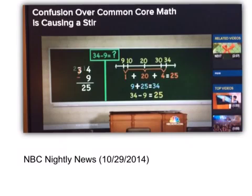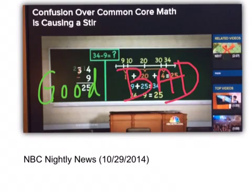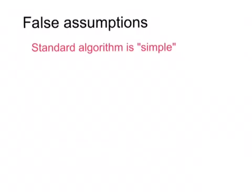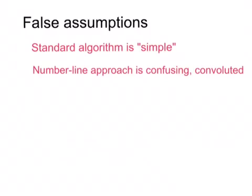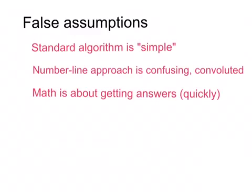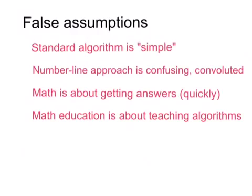This example, like many others online, is meant to show that the traditional approach is good, and the quote unquote common core approach is bad, but this of course rests on many false assumptions. Here are some of the false assumptions behind these kinds of examples. The standard algorithm is simple. The number line approach, or other common core approaches, is confusing and convoluted. Math is about getting answers and getting them quickly. Math education is about teaching algorithms.